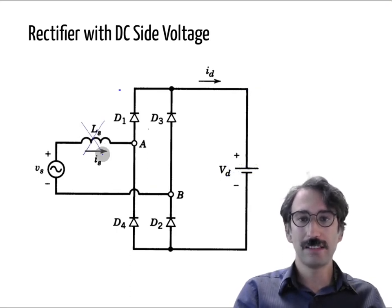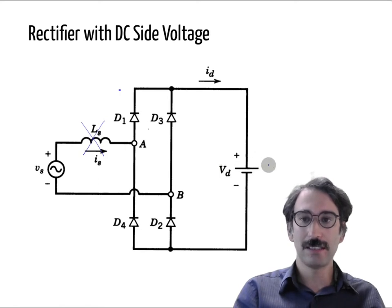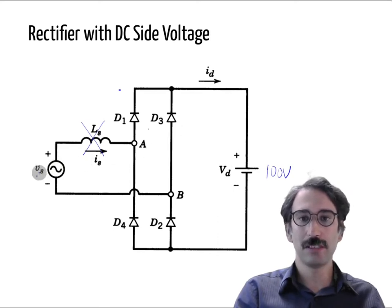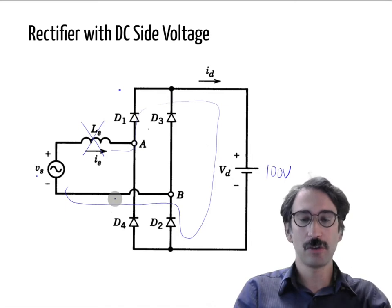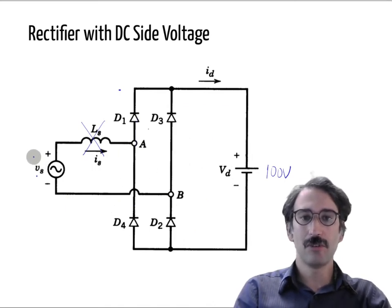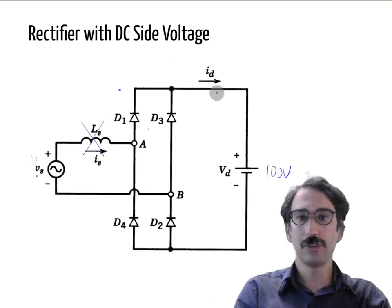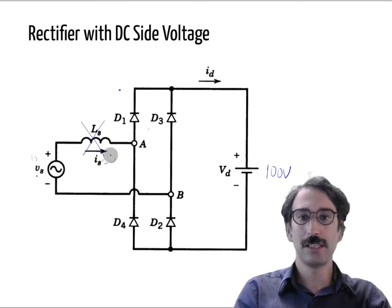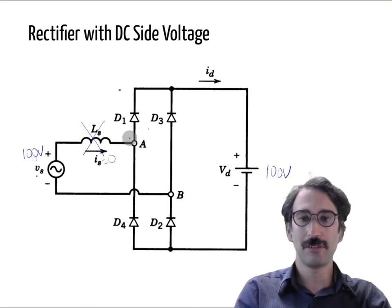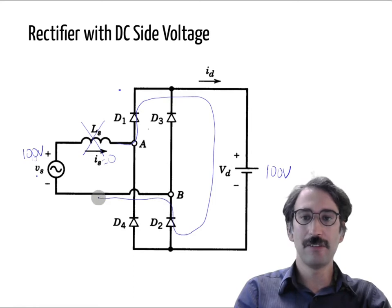First, let's ignore the inductance and think about what happens if we have a positive DC voltage — say 100 volts. In the previous case, whenever the grid voltage was positive it would start flowing through D1 and D2. But now, if our grid voltage is only 10 or 20 volts, there is not enough voltage to forward bias the diodes. No current flows until the input voltage reaches 100 volts; only then do the diodes start conducting.